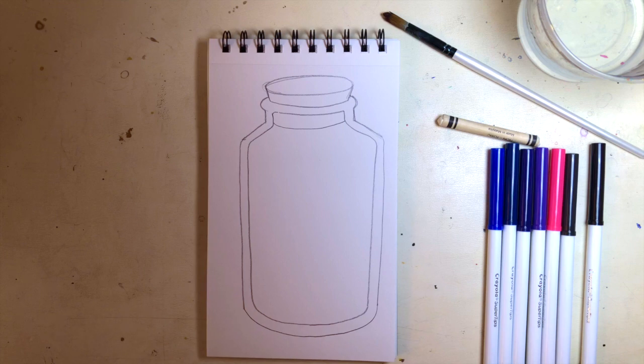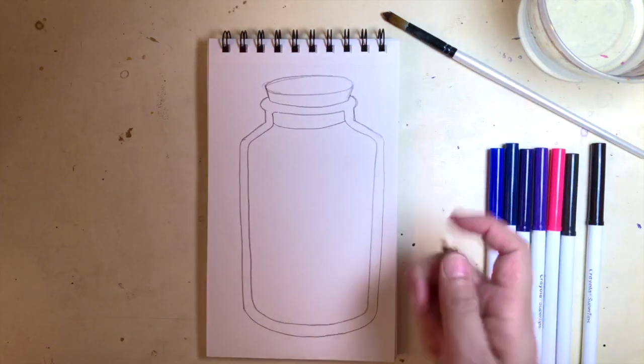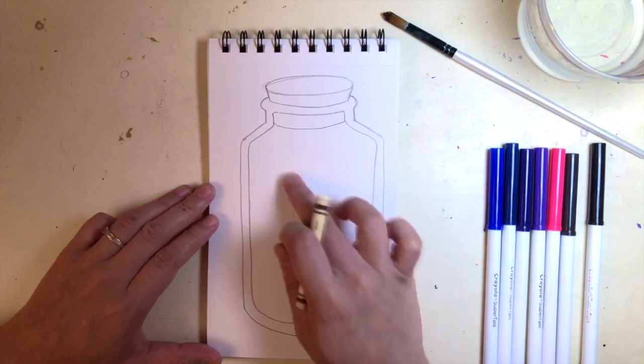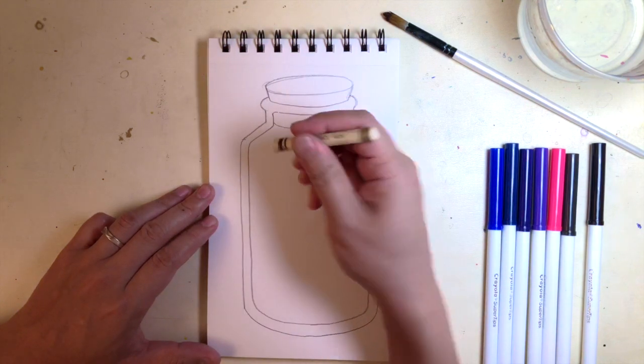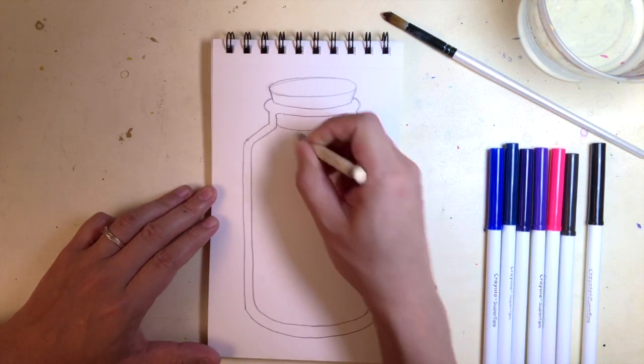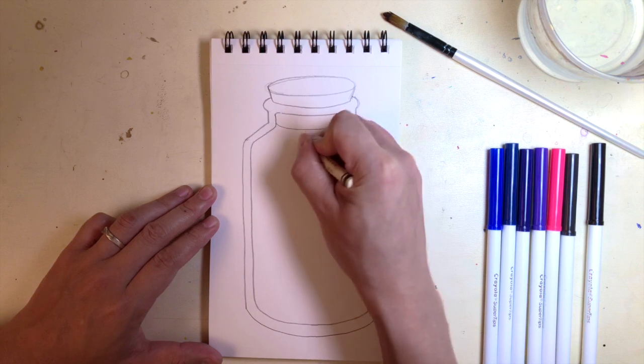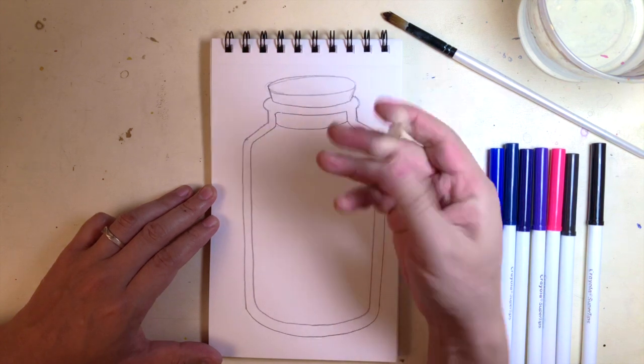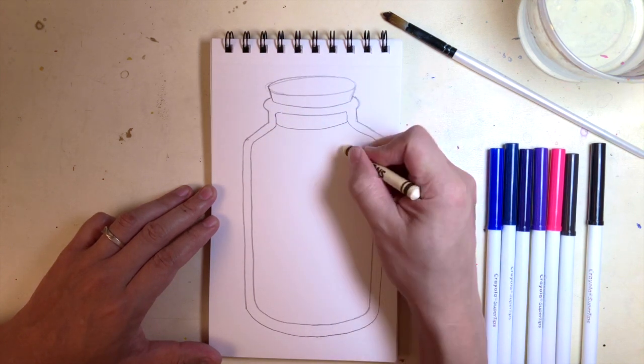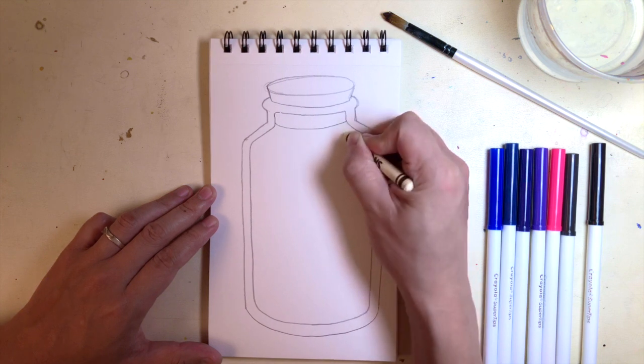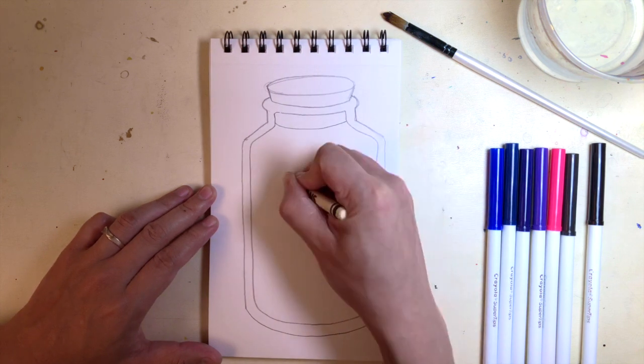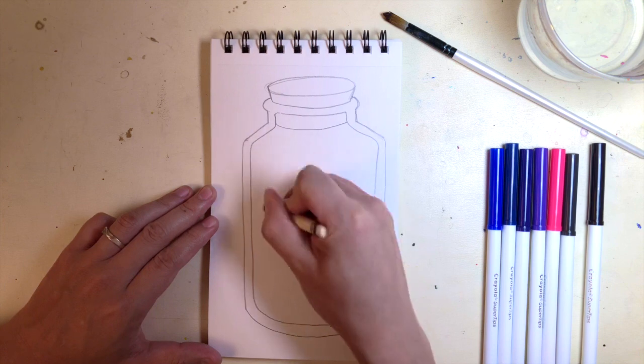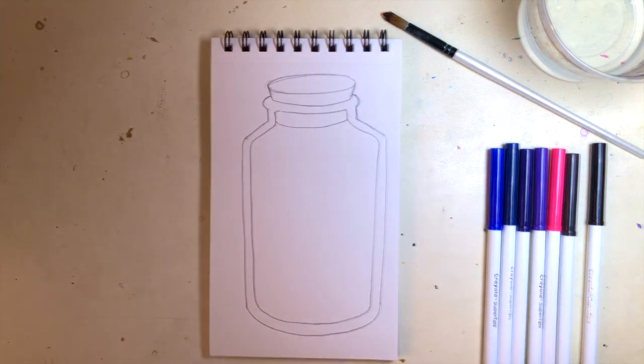Then I'm going to switch to my white crayon. Make sure it's a white crayon, because we want to have some stars inside a jar. And you'll see the results at the end. Now drawing it with a white crayon might be a little bit challenging, because you're not sure where you're drawing. Try to look under the light so that you can see the shininess of the wax from the crayon.